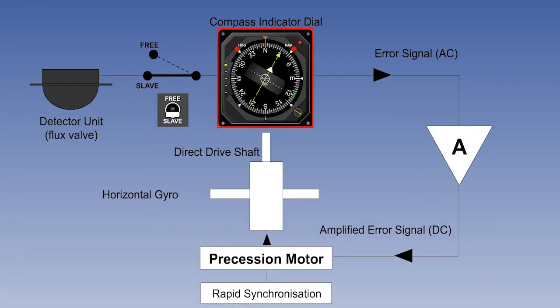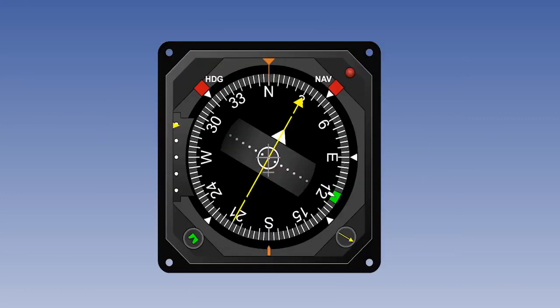The first one to look at in more detail is the compass indicator dial. Here is a typical modern compass indicator dial. As we know, the compass card is directly driven by the shaft from the gyro. It rotates as heading changes and the heading is read against the index line in the 12 o'clock position, which is sometimes called the lubber line.